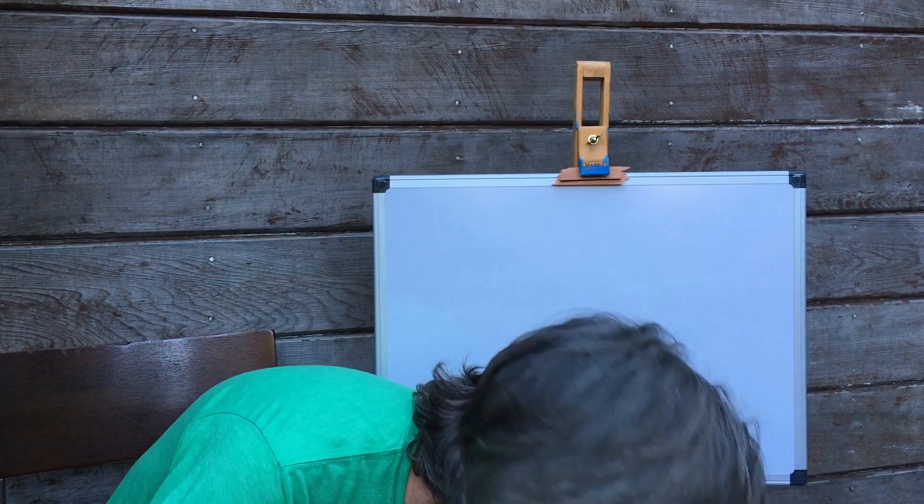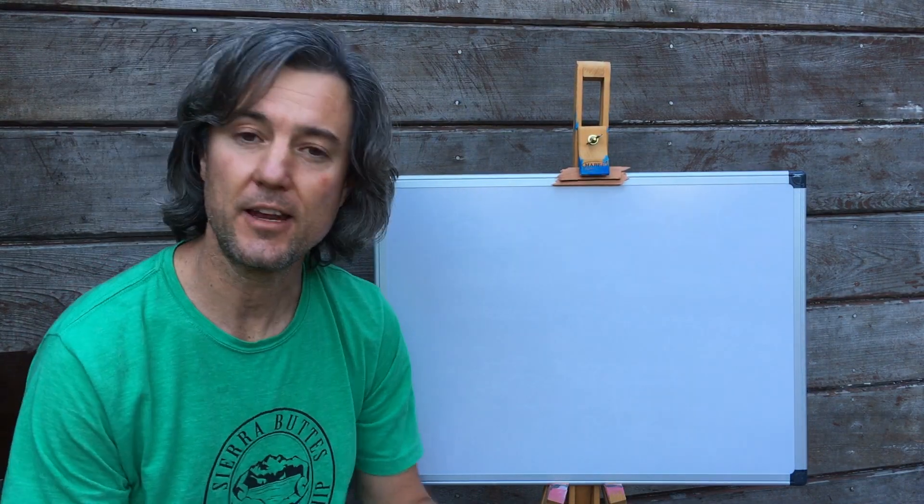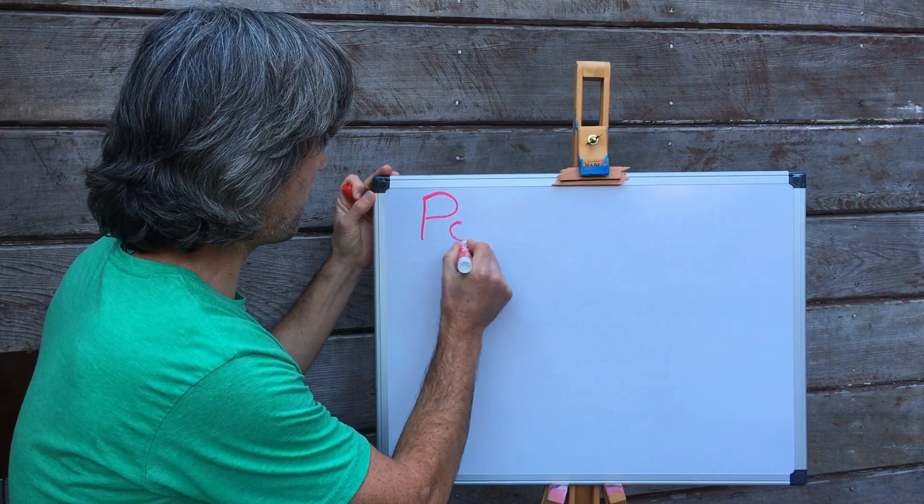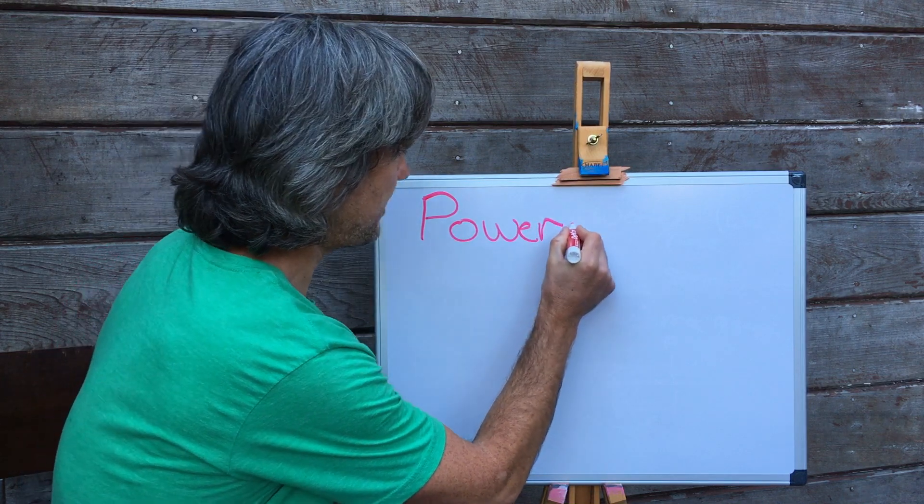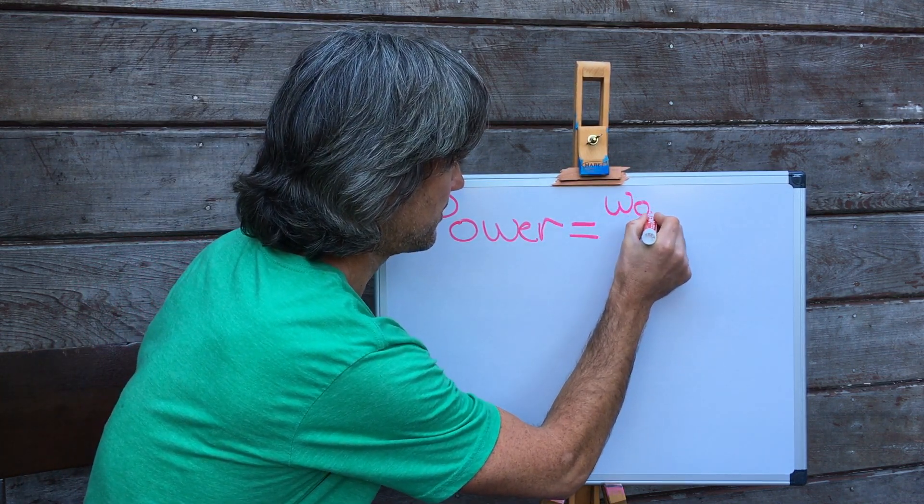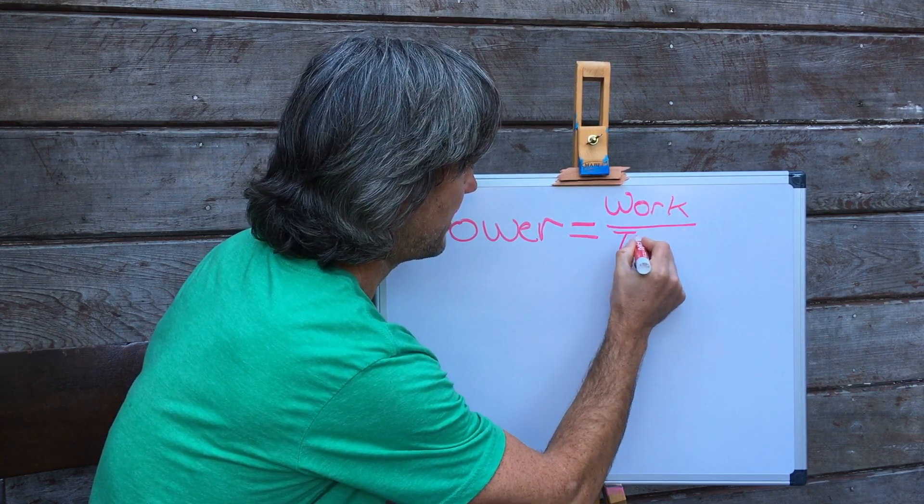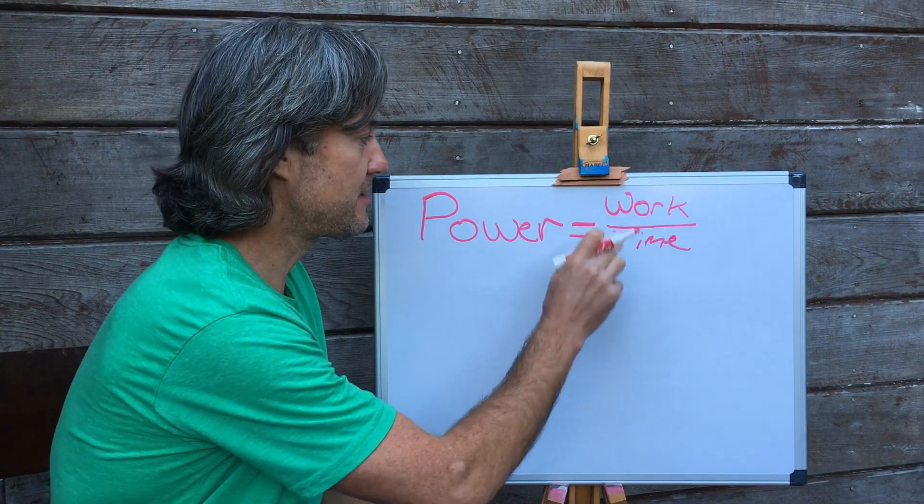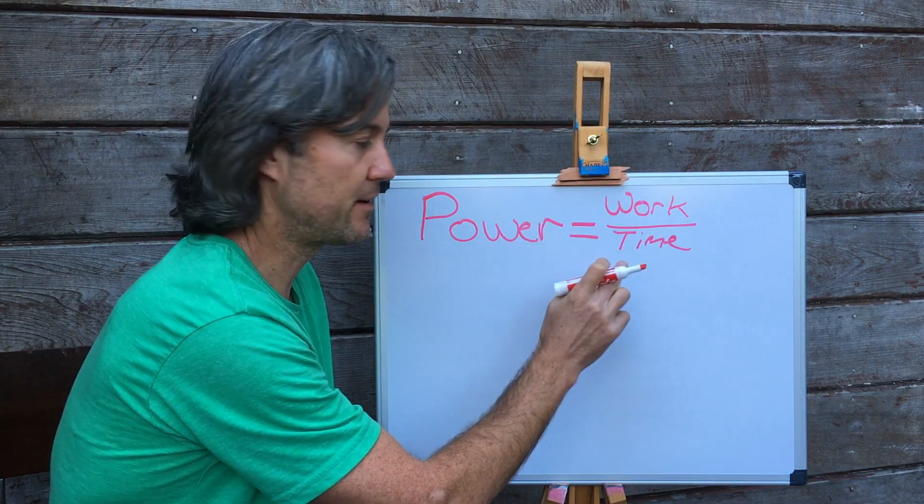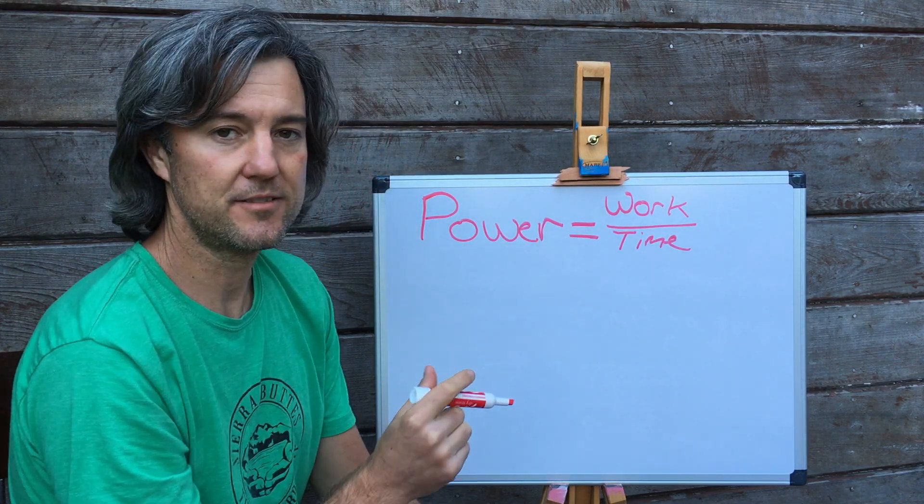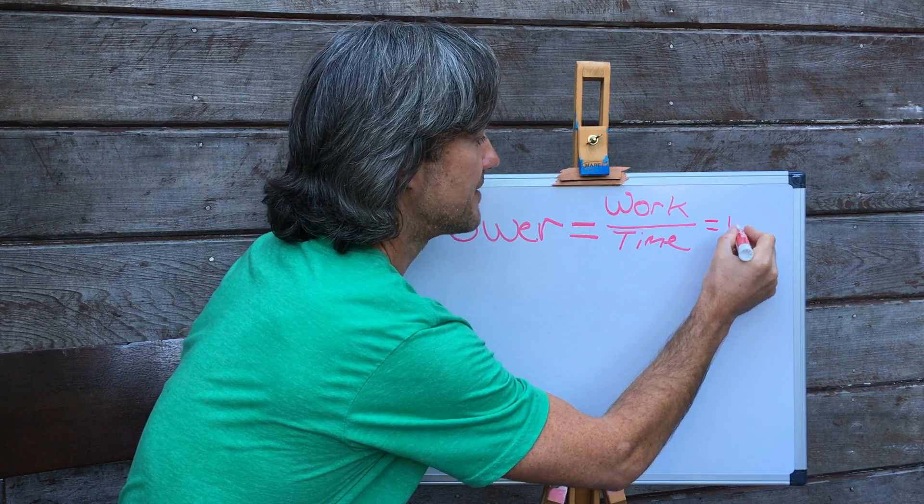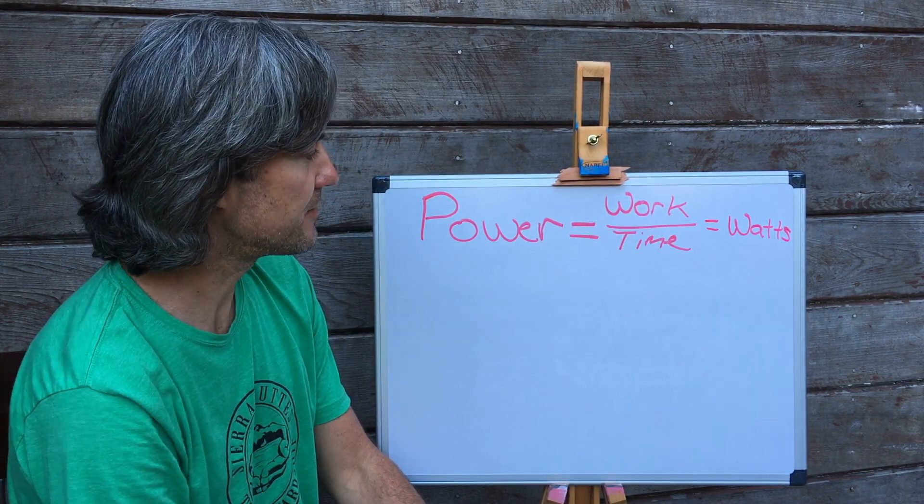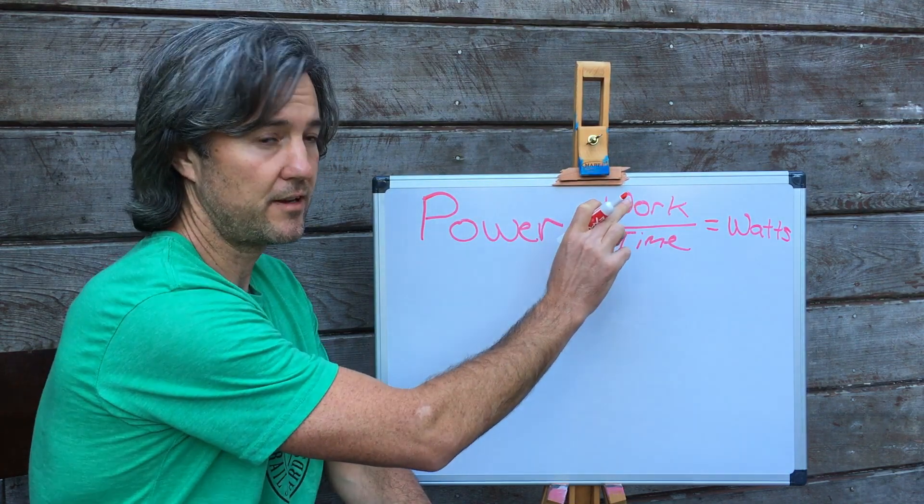All right, so the first thing we will need to do is define a few terms. First obvious one is power. What is power? So let's define that. Power is work divided by time. Okay, I think this is pretty understandable. Power is the amount of work that you have done in a period of time. And the units for power are watts, W-A-T-T-S. Those are the units of power.